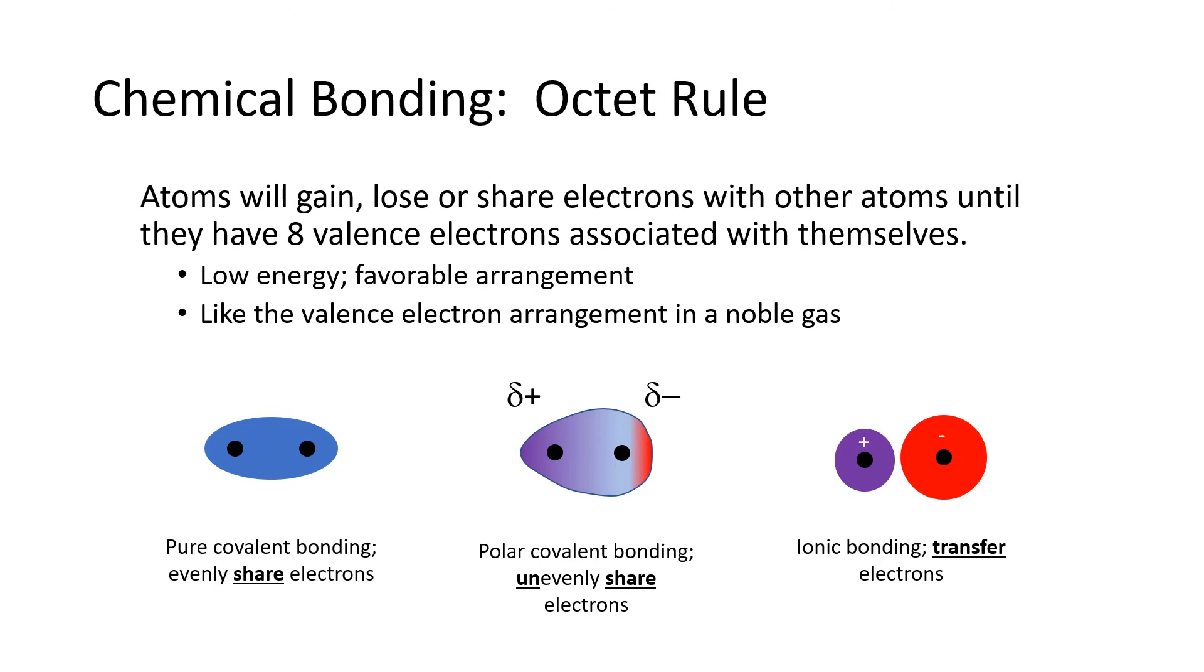The bonding continuum has two extremes in the diagram at the bottom of the screen on the far left. We're talking about pure covalent bonding where two atoms evenly share a pair of electrons. And those electrons roam randomly about the two atoms. And on the far right, we have ionic bonding, which happens when one atom transfers one or more electrons to another atom. The atom that lost the electrons ends up with a positive charge and the one that gained the electrons ends up with a negative charge.